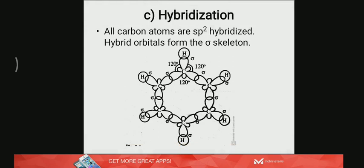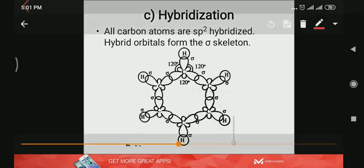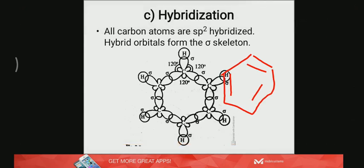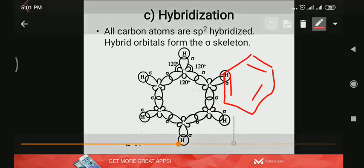What is the hybridization state of carbon in benzene? It's very clear that it is sp2, because if you consider the structure of benzene, each carbon is associated with a double bond, so that carbon will be sp2 hybridized. So all the six carbon atoms are sp2 hybridized.